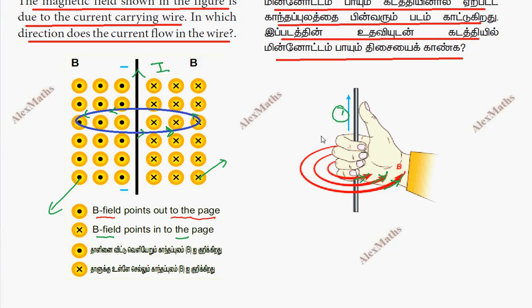So we have to use the right-hand thumb rule and use the direction. The rule is: the right-hand thumb represents the current flow, and the fingers represent the magnetic field direction. So if the fingers curl in the magnetic field direction, the thumb points in the upward direction. In which direction does the current flow in the wire? The answer is the upward direction.